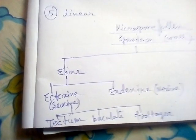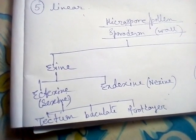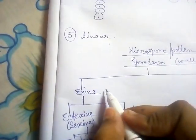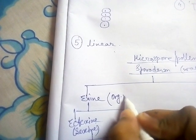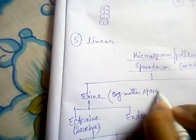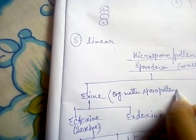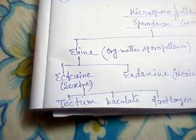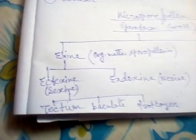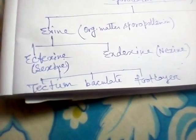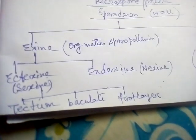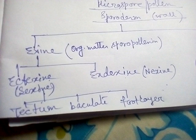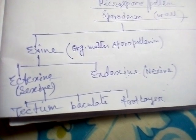In the case of exine, an organic matter is present known as sporopollenin. Sporopollenin is a very resistant organic material; it keeps the pollen grains resistant from high temperature, acid, and alkali. That is the function of sporopollenin.